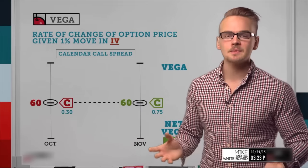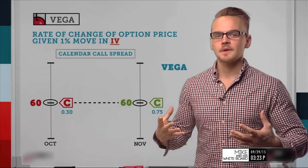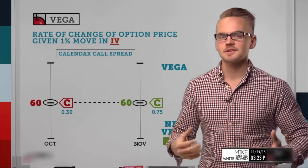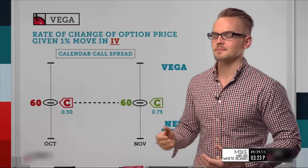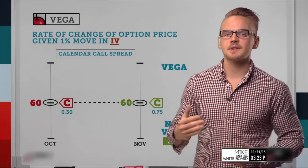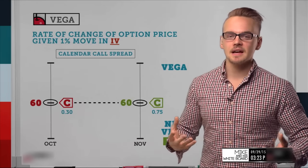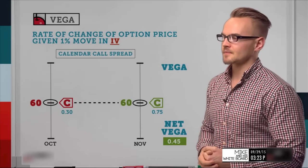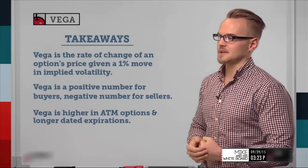This is especially important when talking about defined risk and keeping risk low in smaller accounts. When trading defined risk trades, you want to keep your Vega value low so that big swings in implied volatility don't impact your trades as much as they would with a naked option.